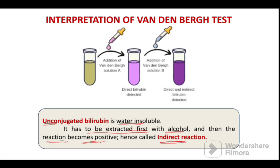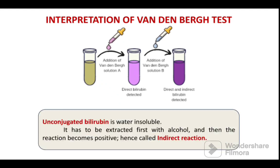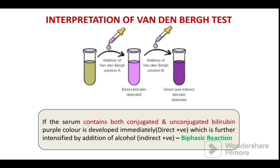For unconjugated bilirubin, the purple color is seen only after the extraction with alcohol, because it is water insoluble. Whereas, if the serum contains both conjugated and unconjugated bilirubin, the purple color is developed immediately — which is direct positive — and it also develops after the addition of alcohol; the purple color is intensified, becoming much darker. Because the purple color is seen at both stages, it is called as biphasic reaction.